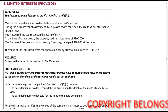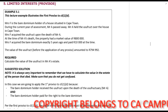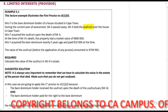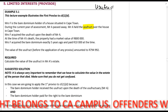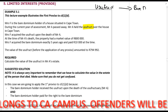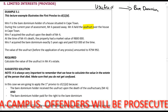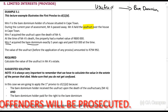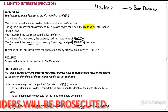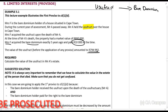Mrs. F is the bare dominium holder of a house situated in Cape Town. During the current year of assessment, Mr. A passed away. Mr. A held the usufruct over the house in Cape Town, and Mrs. F acquired the usufruct upon the death of Mr. A — this is the situation where the usufruct went to the person who holds the bare dominium, which is how common law works. At the time of Mr. A's death, the property had a market value of 800,000 rands. Mrs. F acquired the bare dominium five years ago and paid 10,000 rands for it. The value of the usufruct in Mr. A's estate is 794,992.